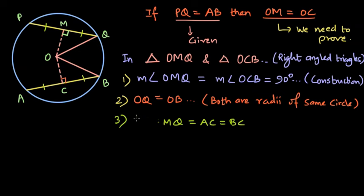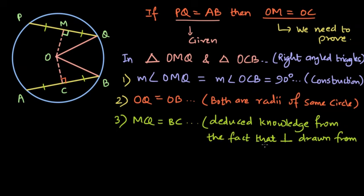So we will just keep MQ and BC here. MQ is equal to BC. I can say this is deduced knowledge from the fact a perpendicular drawn from center to the chord bisects it. You won't really have to write such a long reason in the exam, but I'm just writing it for you to understand. This is deduced knowledge from the given point as well as something you know from geometry.